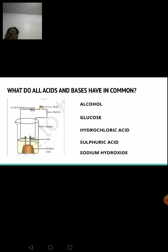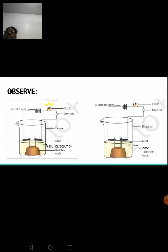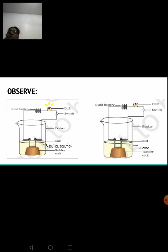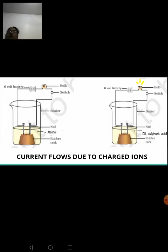First, hydrochloric acid is placed in the beaker. When the circuit is closed and the switch is on, the bulb emits light — shown by the yellow lines — indicating that hydrochloric acid conducts electricity. Next, glucose is placed in the beaker. When the circuit is closed and switched on, the bulb does not emit light, so glucose does not allow electric current to pass through.